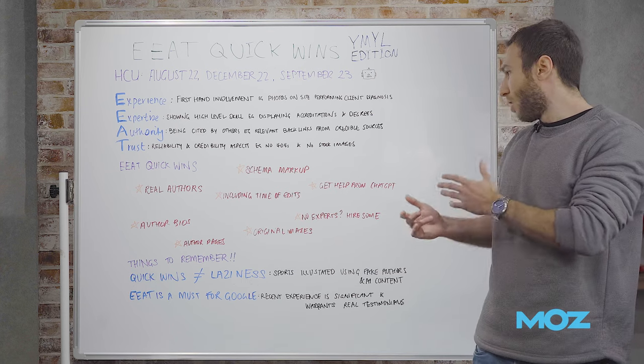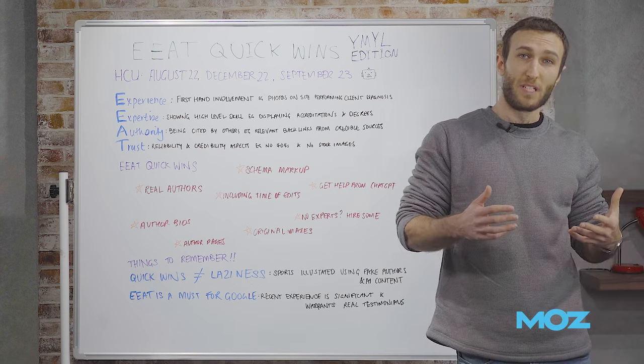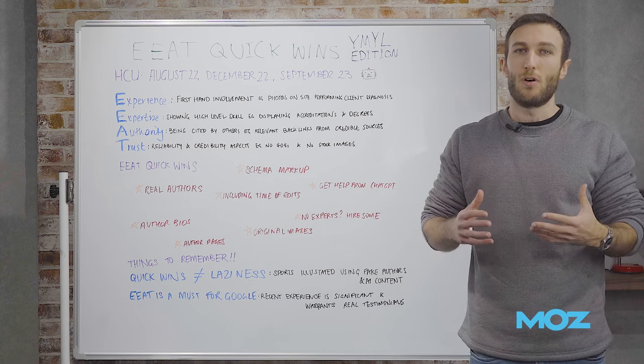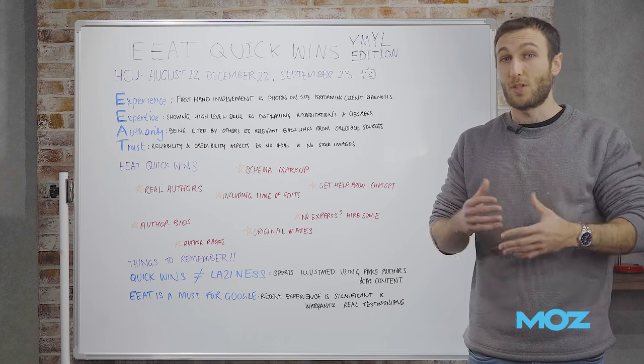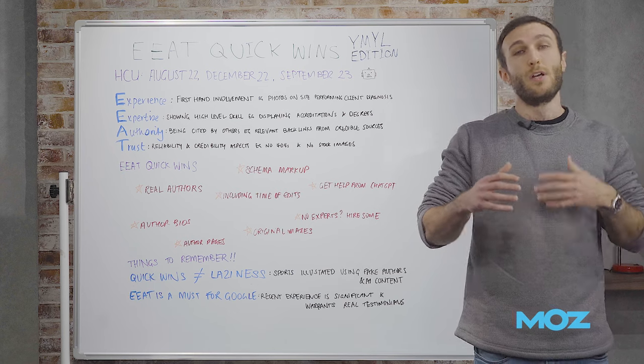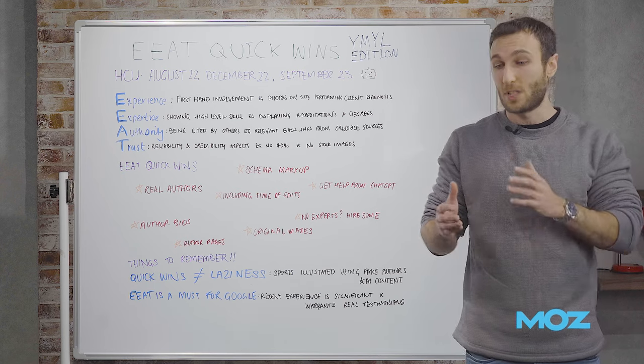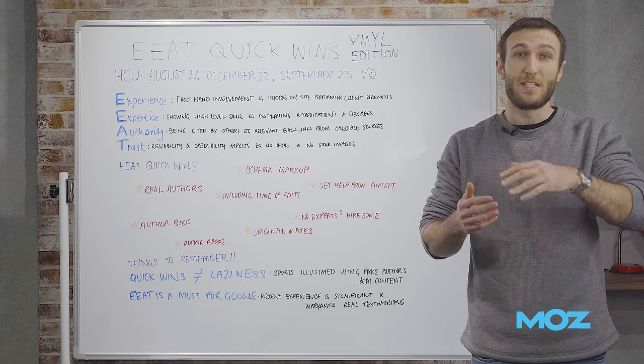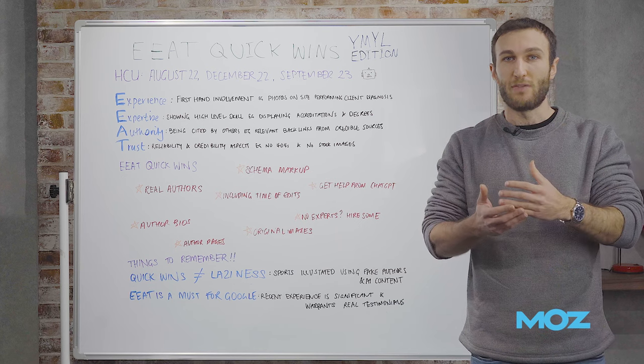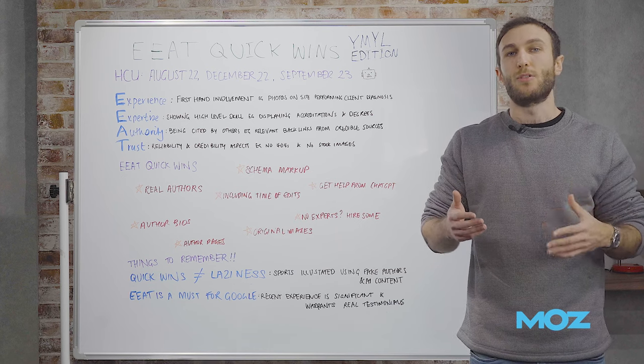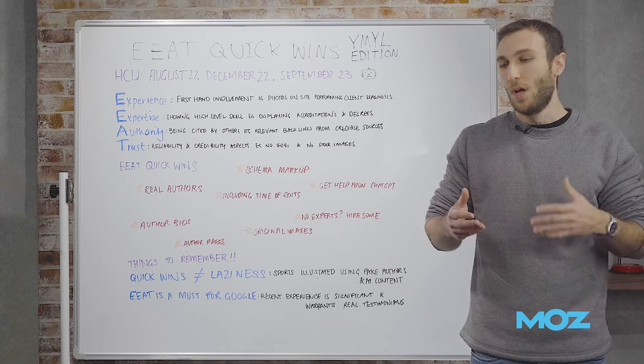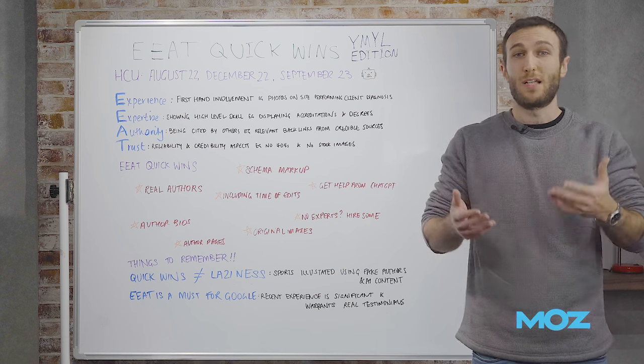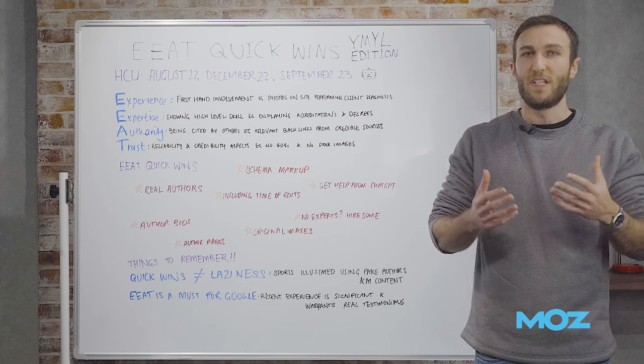Next is the inclusion of edit times within content. For example, if you're publishing medical-related content, things can change a lot in your niche, and there may be multiple people reviewing content. Within your content, you can specify who wrote it, when it was last edited, and who edited and revised that version. This makes the timeline very clear for people, which helps users and Google put more faith in the content itself.